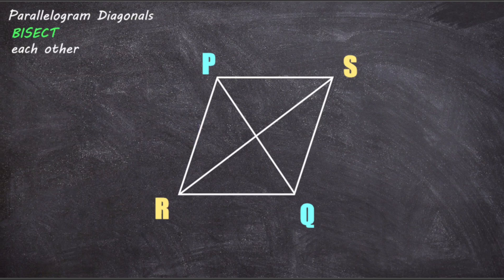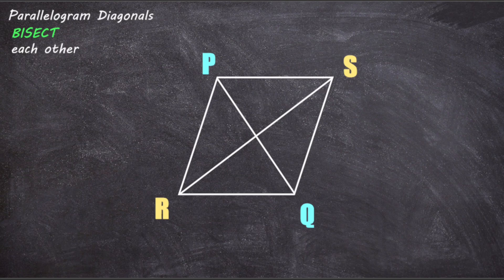In mathematics, the word bisect means to divide something into two equal parts. So by the statement 'parallelogram diagonals bisect each other' we mean that each of these lines divides the other into two equal parts. So the diagonal RS divides the diagonal PQ into two equal parts — let's put an indicator in for that. And because both diagonals bisect each other, it means the diagonal PQ also bisects the diagonal RS — let's put an indicator for that as well.